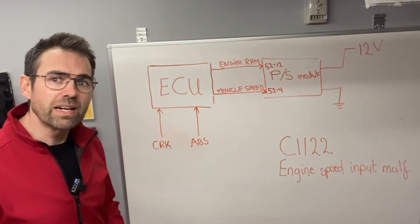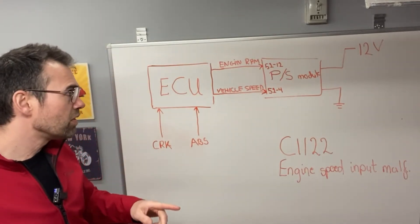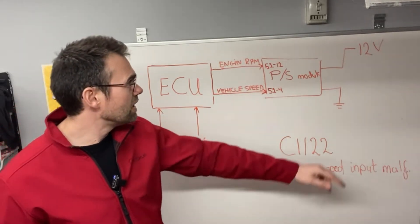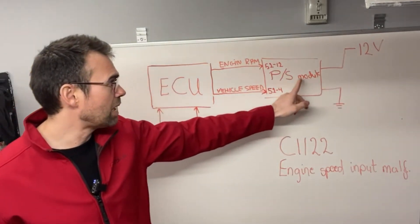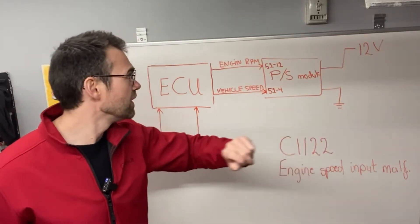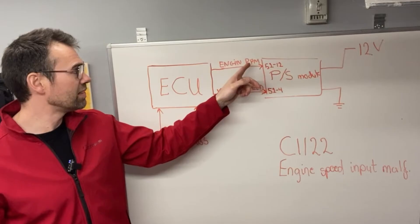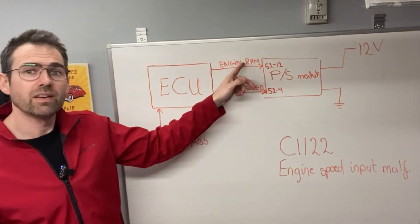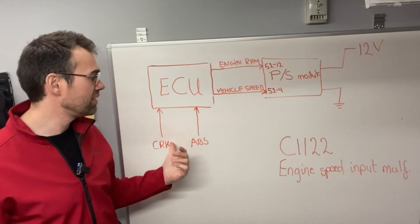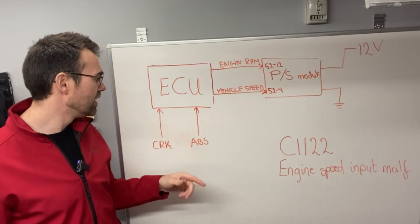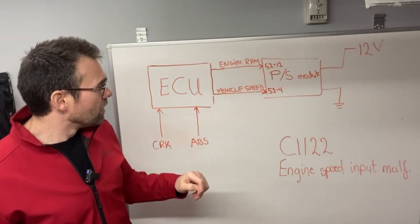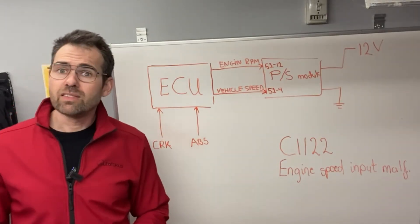So I think we should jump right into it. Following a very simple principle, we're going to see: do we have supply voltage to the power steering control module? Do we have a good solid ground? And then we're going to look at the signals from the engine RPM - basically a crankshaft position sensor, which is a hall sensor - and this is also a hall sensor for the wheel speed. Let's see what happens.